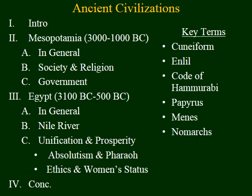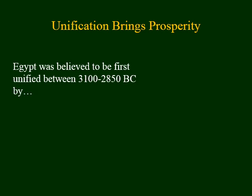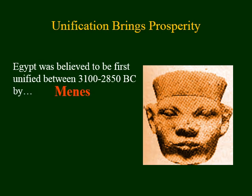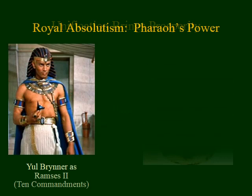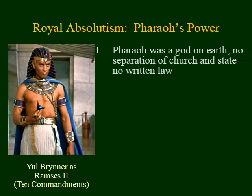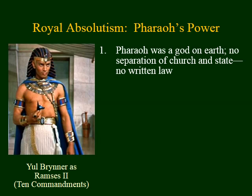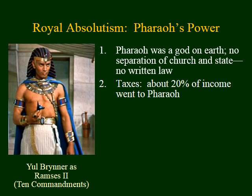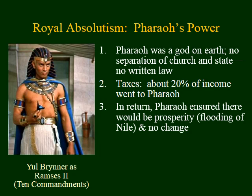Egypt remained divided for many years until about 3000 BC, when it's believed it was first united under the man shown here — his name was Menes. This brought an era of prosperity to Egypt beginning about 3000 BC and extending to about 30 BC. Over the years, the title for the king came to be known as Pharaoh. Pharaoh was known as a god on earth, and just like the Mesopotamians, there was no separation of church and state. There was no need for written law because whatever Pharaoh said became law immediately. People paid about 20% of their income to Pharaoh, and in return Pharaoh ensured prosperity by making sure the Nile flooded every single year.